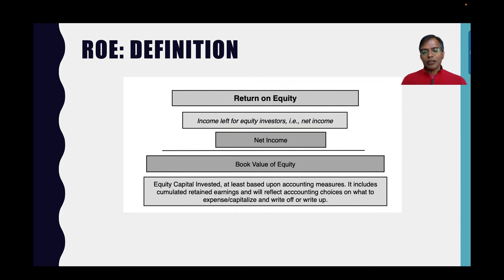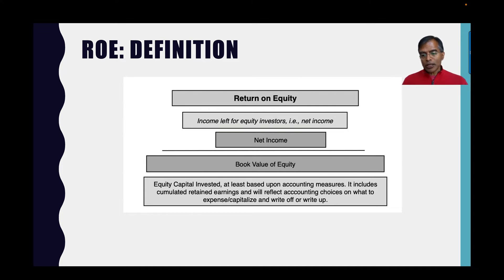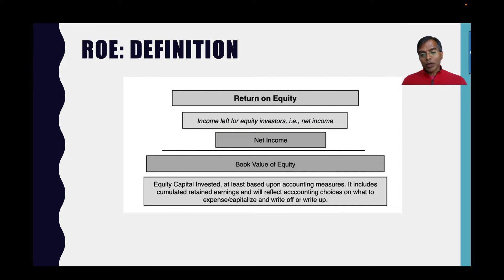Return on equity is net income — and net income can be before extraordinary items, after extraordinary items, normalized or not normalized. Lots of choices. Book value of equity is the equity capital invested, at least based on accountants. That book value of equity can be negative if you lose enough money for long enough periods or you do a huge buyback. So net income divided by book equity gives you return on equity as long as the book value of equity is positive. If it's negative, return on equity becomes not meaningful.